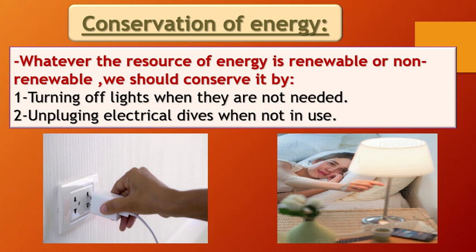Now we will take conservation of energy — saving or keeping the energy. How can we save the energy, whether it comes from renewable or non-renewable resources? By turning off the light when it is not needed, and by unplugging electric devices when not in use, so we can conserve the energy from being lost.